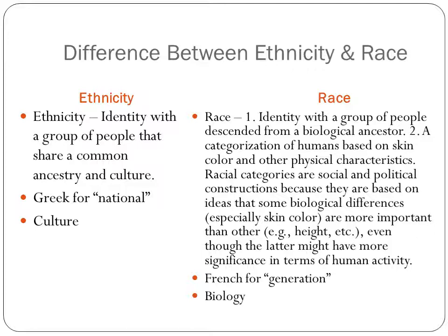Here are the two definitions for race. First: identity — again, this is self-identification — with a group of people descended from a biological ancestor. Second definition: a categorization of humans based on skin color and other physical characteristics. Racial categories are social and political constructions because they are based on ideas that some biological differences, especially skin color, are more important than others — the example being given height — even though the latter might have more significance in terms of human activity.